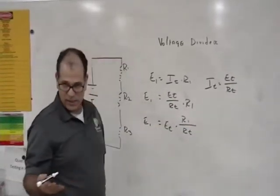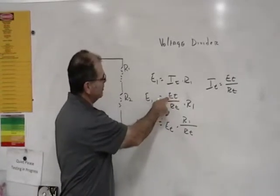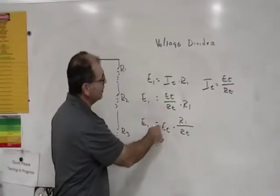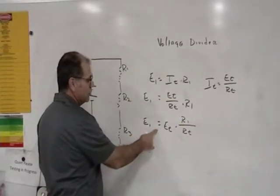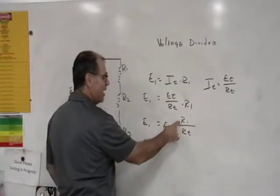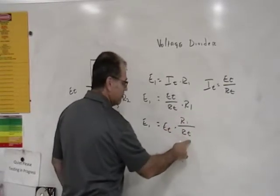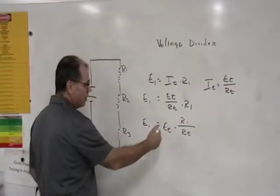Mathematically, it's the same. All I did was move the total voltage down here and R1 up there. So E1 is equal to the total voltage times R1 divided by the total resistance.